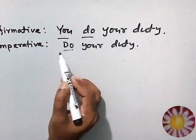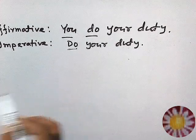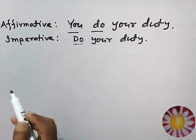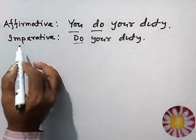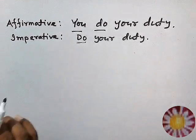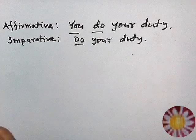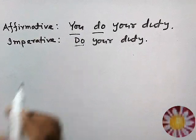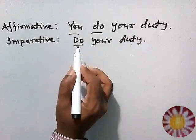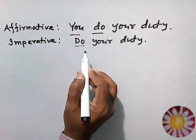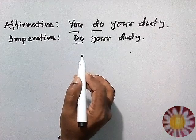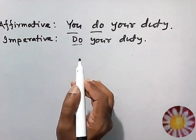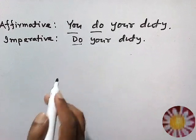In that sentence, the verb is used at the beginning of the sentence, and that is called an imperative sentence. The sentence that expresses any request, order, advice, proposal, or suggestion is called an imperative sentence.